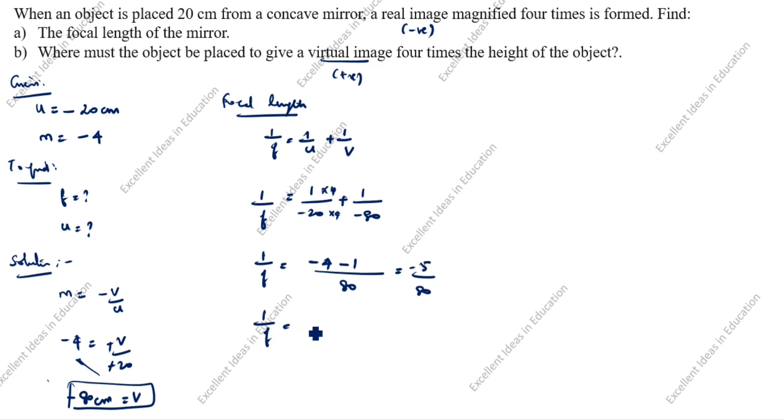1 by f is equal to minus 5 by 80. f is equal to 80 by 5, which is 16. So f is equal to minus 16 centimeter.